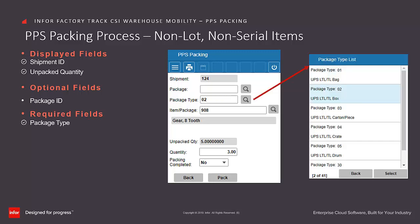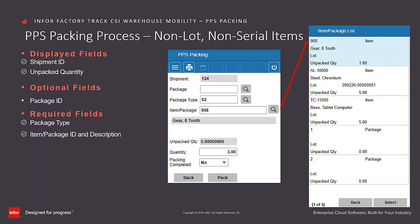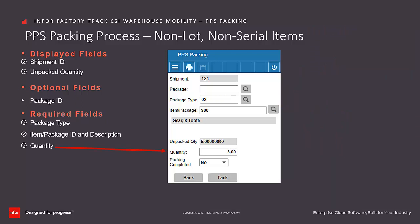You can enter, scan, or search the package type that has been used to pack the specified items. If a Package ID has been supplied, this field will be display only and defaulted based on the Package ID's defined type. You can enter, scan, or select the Item ID or Package ID that has been packed into the selected package type. Note that this is defaulted based on the previous selection but can be edited by the user. You can enter the quantity of the items that have been packed into the specified package. Note that this only applies when an item is selected for packing and will be hidden if a package record is selected. Enter whether the processing of this transaction will complete the packing for the entire shipment record; this is defaulted to No.